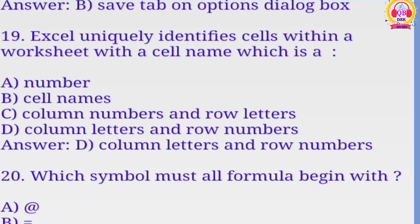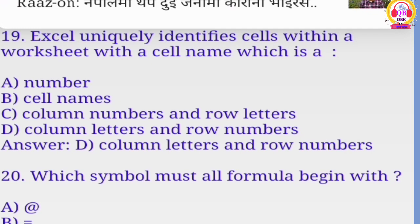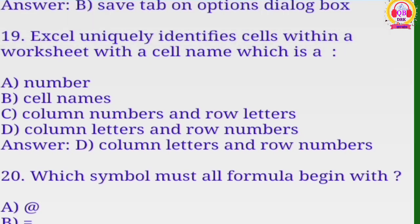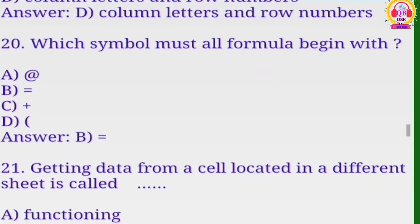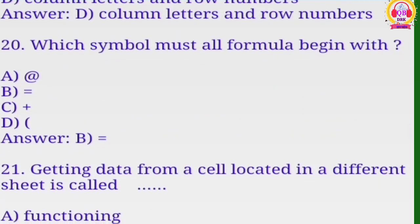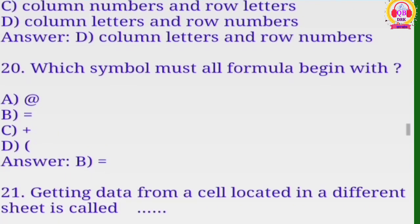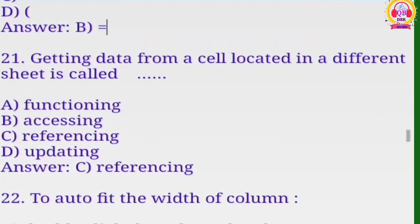Excel inquiry identifies cell within a worksheet with a cell name which is ABCD. D is the correct answer, column letters and row number. Which symbol must all formulas begin with? ABCD, correct option is B, equal.